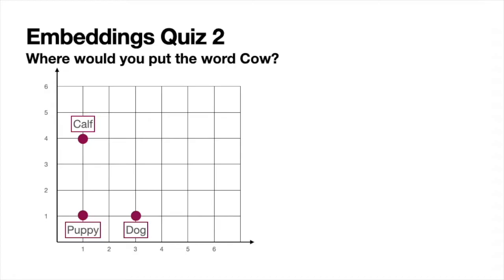Word embeddings also have some really interesting properties. For example, let's look at this other quiz. We have the words 'puppy,' 'dog,' and 'calf,' and we'd like to locate the word 'cow' somewhere in this embedding. Where would the best place be — spot A, spot D, or spot C? Feel free to pause and think about it. Although it would be tempting to put it close to 'calf' because it's a similar animal, or close to 'dog,' I would actually put it in spot C. The reason is that embeddings tend to capture analogies well.